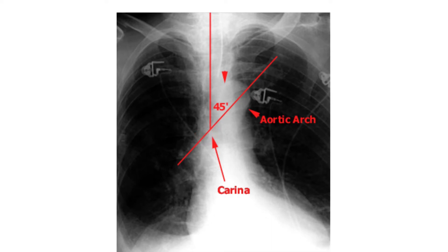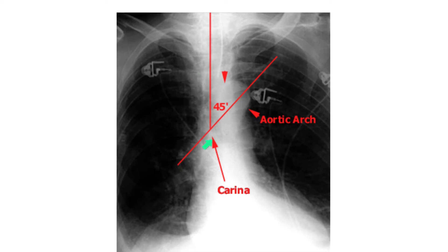It's very important to locate the carina because that tells you whether the ET tube is too deep or too high. The ET tube is translucent but has a strip of radiopaque material so we can identify it on the x-ray. We always want the ET tube to be around two to three centimeters above the carina — look at the tube relative to the carina to assess how high or low it sits.